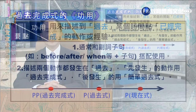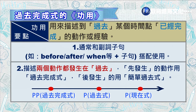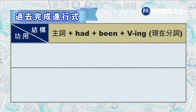我们再复习一次过去完成式的使用时机和原则。第一，两个动作会先后发生在过去。第二，先发生的动作用过去完成式，后发生的动作用过去式。这个规则非常重要。最后一个部分是过去完成进行式，它的结构是主词加 had 加 been 加 V-ing（现在分词）。